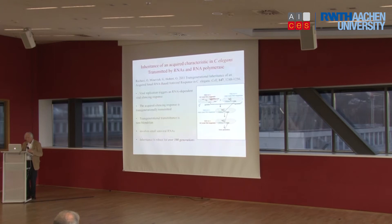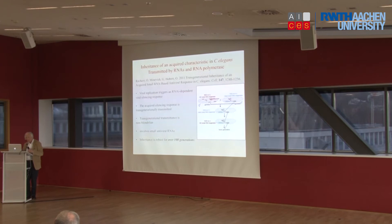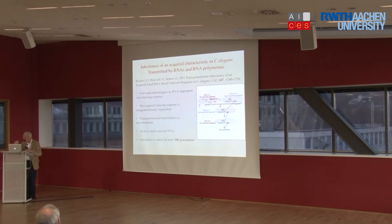There are various ways in which this can happen. A very good example of inherited acquired characteristics was published in Cell — I think in 2011 — using the small planarian worm C. elegans, a great favourite of geneticists because it has a particular number of cells and is a very determinate organism. The researchers gave some worms a virus to respond to, triggering an RNA silencing mechanism.